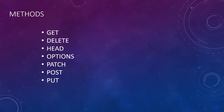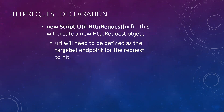Here's a quick list of all the methods that are available — pretty simple stuff. From there we move on to how to make a declaration of HTTP request. It's as simple as just assigning a variable with 'new Script.Util.HttpRequest', and then in parentheses you have the URL, which is the endpoint that you will be targeting. That will then set up your new request.